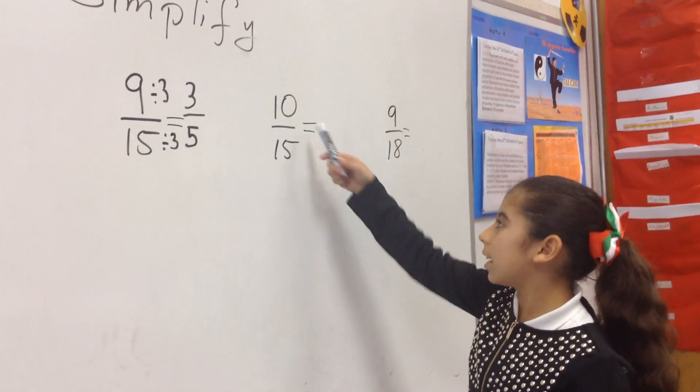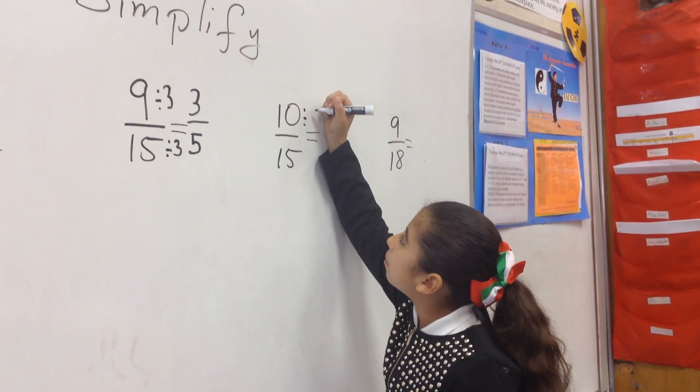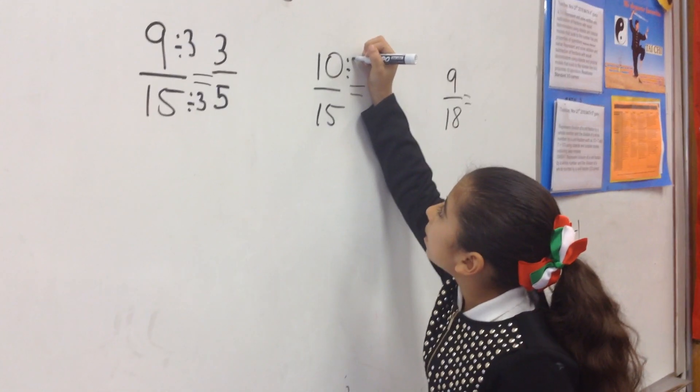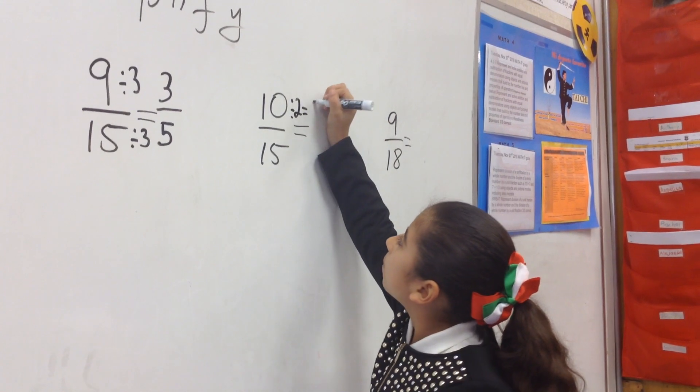15, 10 divided by 3. No, probably. Like, 2 equals 5.